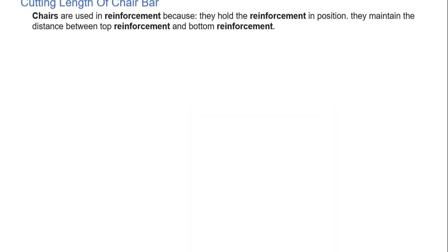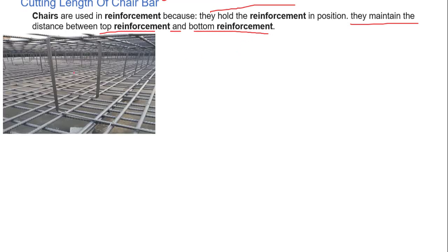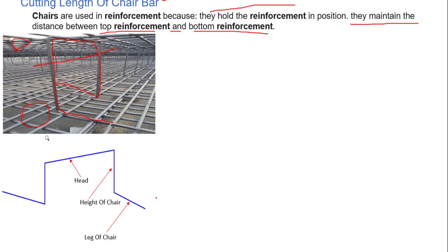First, let's look at the definition of the chair bar. Chair bars are used in reinforcement because they hold the reinforcement in position. They maintain the distance between top reinforcement and bottom reinforcement. Here in this picture you can see the chair bar and its shape — it holds the top reinforcement and bottom reinforcement.